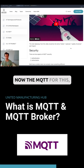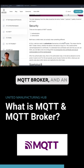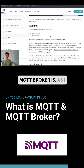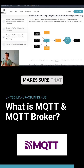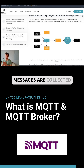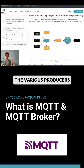For MQTT, you need a central component which we call an MQTT broker. An MQTT broker is the component that makes sure that messages are collected and can be read from by the various producers and consumers.